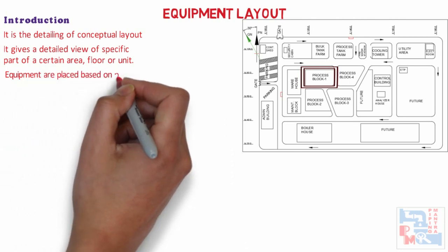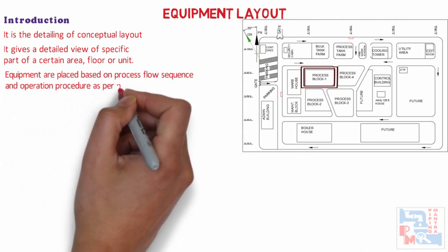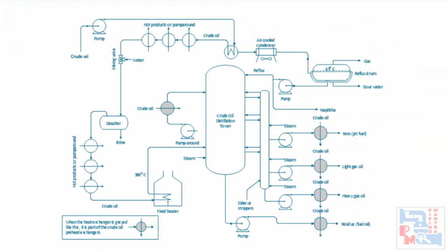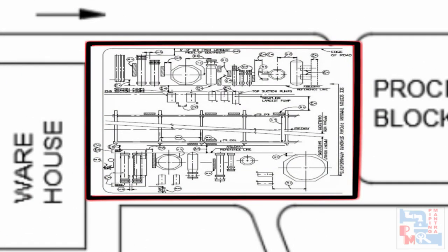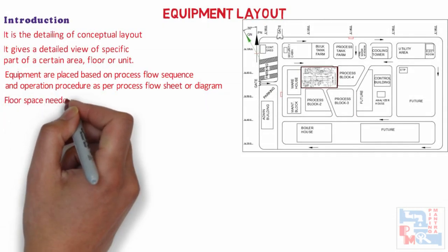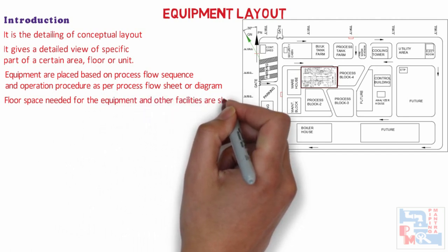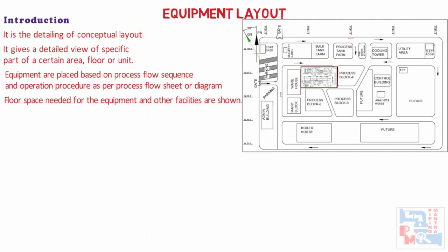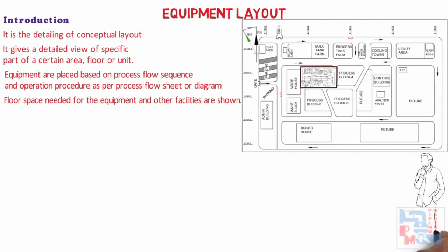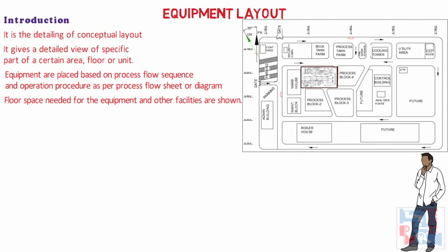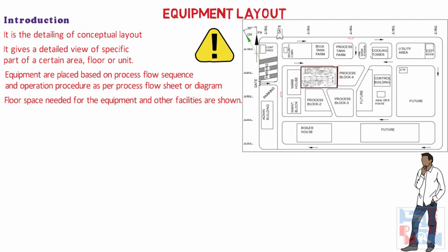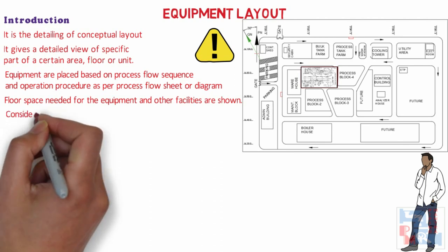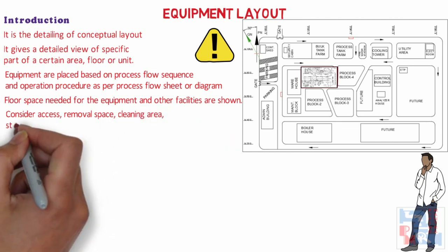Equipment are placed based on Process Flow Sequence and Operation Procedure as per the Process Flow Sheet or Diagram. We also show floor space needed for the equipment and other facilities. Since we are preparing Equipment Layout in very early stages of the project, sometimes we might not have all equipment information, and we have to assume equipment dimensions as per best engineering practice. While placing equipment, we also have to consider access, removal space, cleaning area, storage space, and handling facilities.